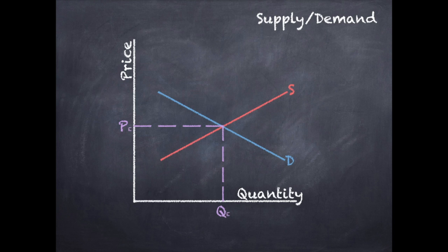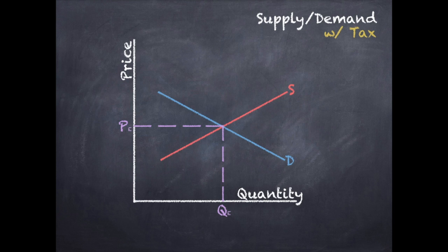Now we're going to look at what happens to this supply and demand curve when you add a tax. We are taking the normal market that we've been looking at and adding a tax to it. The first thing that's going to happen is that one of our two curves is going to shift, because with the addition of the tax, there's going to be a change in price and quantity somehow. For this example, we're going to be adding this tax to the supply curve.